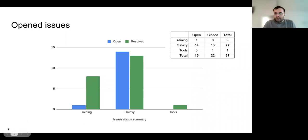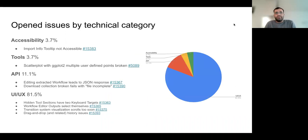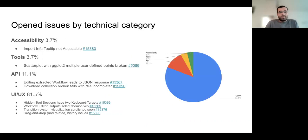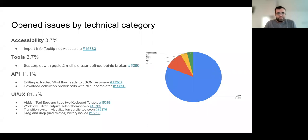I'm going to give you some information about the opened issues and the portion of each. In total, we have 37 opened issues from different areas — terrain in Galaxy, tools, and mostly for Galaxy. If you want to compare by technical category, we have more than 80% of opened issues in the UI/UX area, followed by API, and then tools and accessibility. This means we need to focus more and more on UI/UX bugs and fix them in the future.